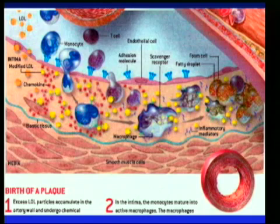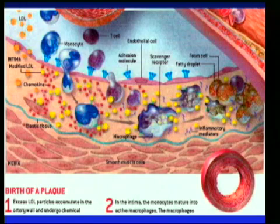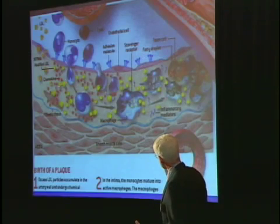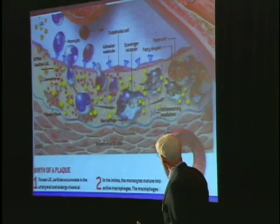Now you're in the subendothelial compartment where it becomes oxidized by this western diet. If you want to know what oxidized is — it's becoming rancid. You take a bite out of an apple, and within minutes it's brown; it's been oxidized, it's going rancid. So now you've got this small, hard, dense LDL cholesterol, which is really the bad actor.